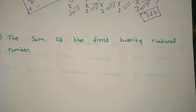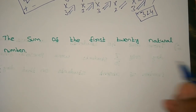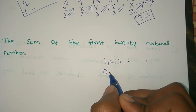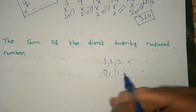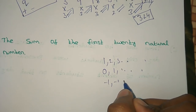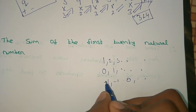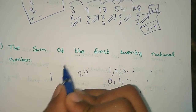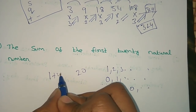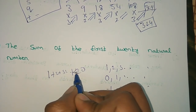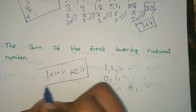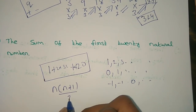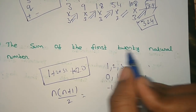The sum of the first twenty natural numbers — so what is a natural number? 1, 2, 3, 4 are natural numbers. The whole number starts at 0: 0, 1, 2, 3. The integer includes minus 1, minus 2, 0, 1, 2, 3. So the natural number is 1 to 20. The sum is 1 + 2 + 3 + ... + 19 + 20. We know the formula: n(n+1)/2. So n is 20.